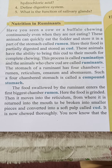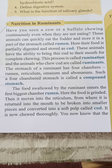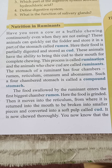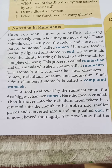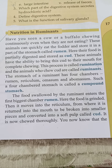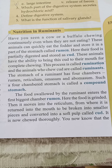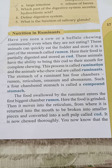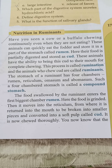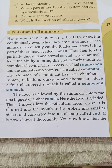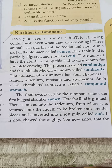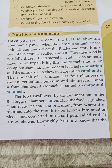The food swallowed by the ruminant enters the first and biggest chamber — the rumen۔ جو food ruminant نے کھانے کے بعد swallow کیا وہ سب سے بڑے chamber rumen میں جمع ہوتا ہے۔ Here the food is ground into smaller pieces۔ Then it moves into the reticulum, from where it is returned to the mouth to be broken into smaller pieces — وہاں سے واپس منہ میں لے جاتے ہیں اور مزید چھوٹے pieces میں convert کرتے ہیں — converted into a soft pulp called cud.